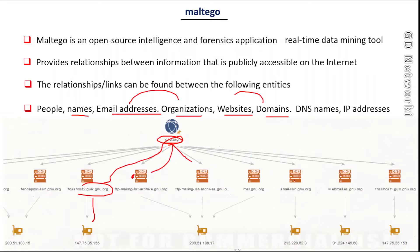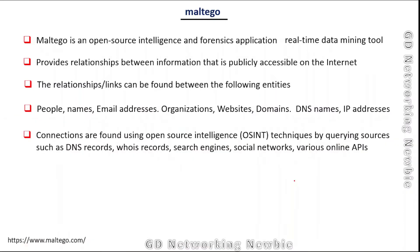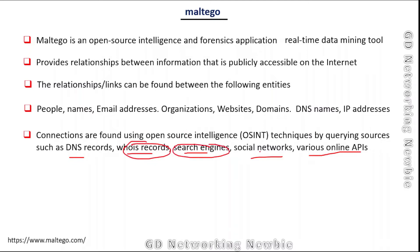This information will be helpful in other phases of pen testing. Maltego uses information that is publicly available, so connections are found using open source intelligence techniques. It sends query messages to DNS records, WHOIS records, search engines, social networks, and various online APIs. Once this information is received, Maltego represents it in a graphical way.